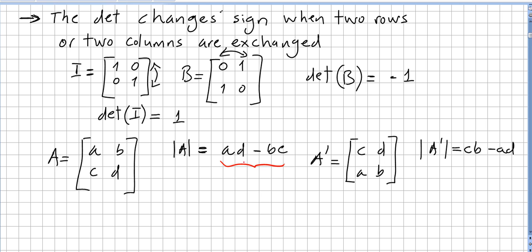So here you have A times D minus B times C. Here you have C times B minus A times D. So the determinant changes sign changing two rows.